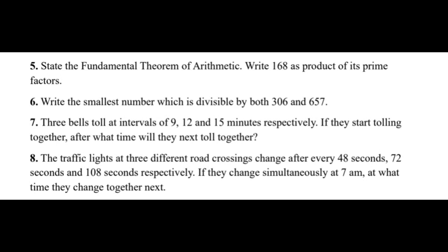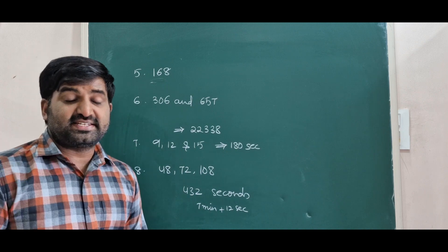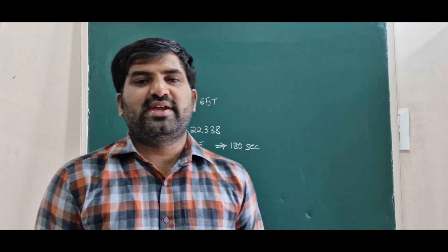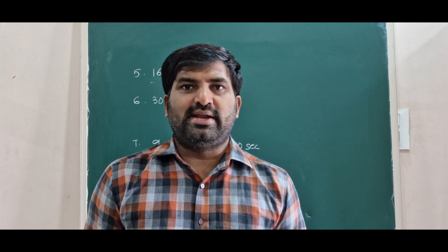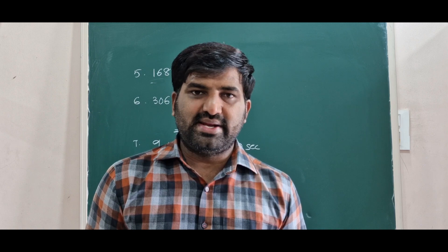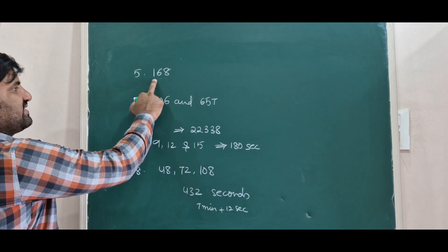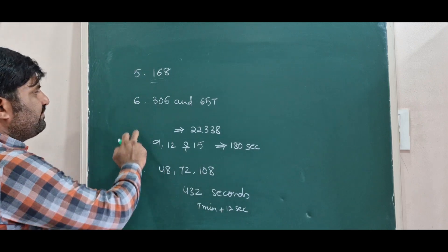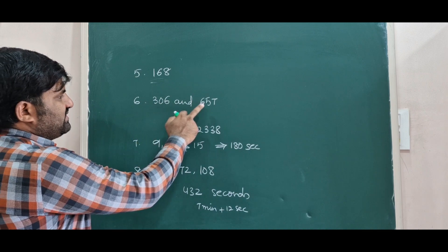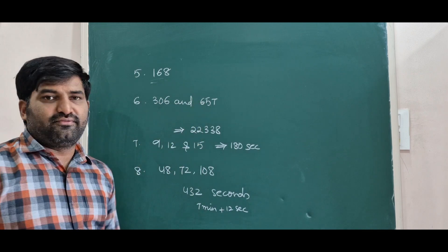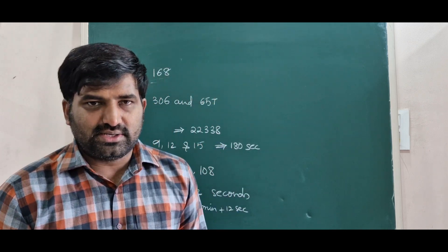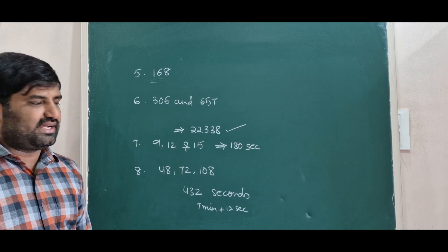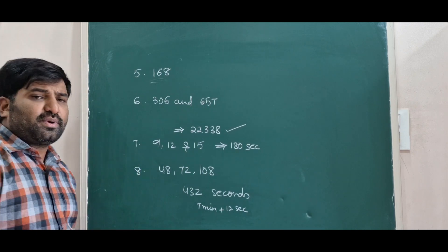The next four questions are related to the Fundamental Theorem of Arithmetic and LCM and HCF. Question 5: state the Fundamental Theorem of Arithmetic and find the prime factorization of 168. The theorem states that every composite number can be written as a product of prime numbers. The prime factorization of 168 can be found as shown. Question 6: find the smallest number divisible by the given three numbers. When finding the smallest number divisible by given numbers, find the LCM — the answer is 22338.